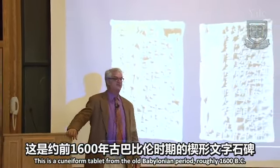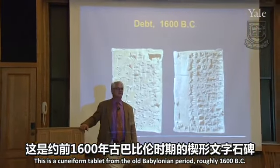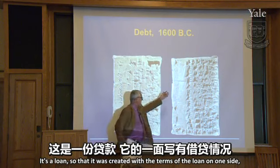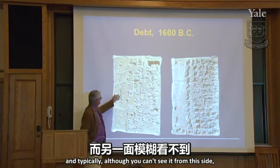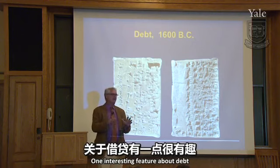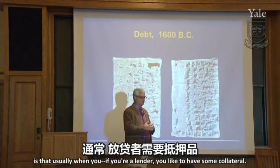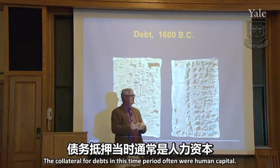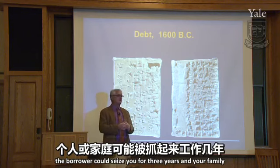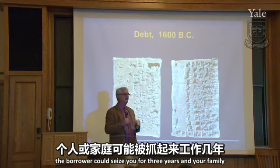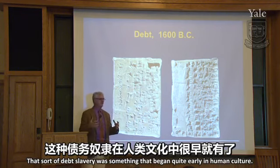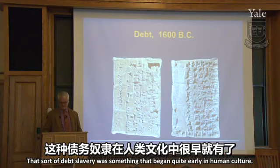This is a cuneiform tablet from the old Babylonian period, roughly 1600 BC. It's a loan — created with the terms of the loan on one side and witnesses on the other. Debt has been around for a long time. One interesting feature about debt is that lenders like to have collateral. The collateral for debts in this time period often was human capital — if you defaulted on your loan, the borrower could seize you and your family for three years to work the loan off.